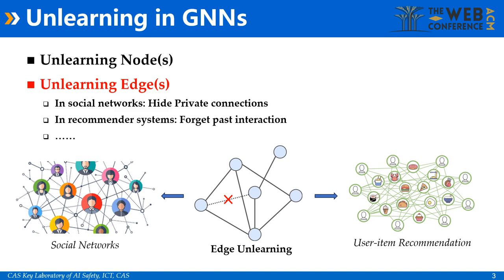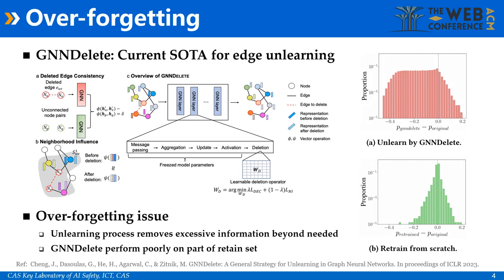Recently, GNNdelete has achieved state-of-the-art performance in edge unlearning. However, we observed a considerable decline in its prediction accuracy for edges in the retained set, especially for those resembling or closely associated with the edges subjected to unlearning.